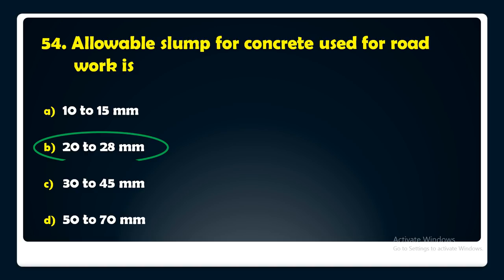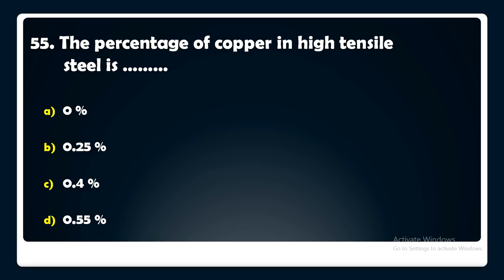The percentage of copper in high tensile steel is — 0%, 0.25%, 0.4%, or 0.55%? The answer is: the percentage of copper in high tensile steel is 0.4%.